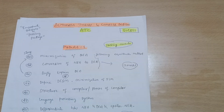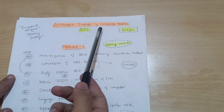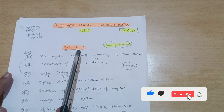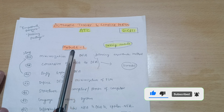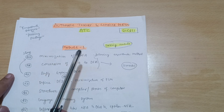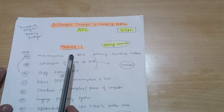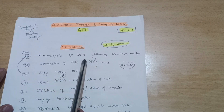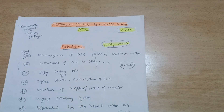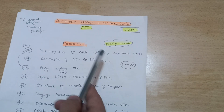Hello everyone, and welcome back to another passing package video for the subject Automata Theory and Compiler Design. So far we have discussed the passing package for Computer Networks and DBMS — if you haven't watched them yet, the links are provided in the description box. Today I will discuss the important questions and passing package — simply how you can pass the Automata Theory subject. There are three passing modules. This is a subject where you cannot pass by theory alone; you have to focus on the problem-solving part.